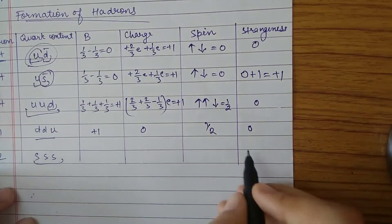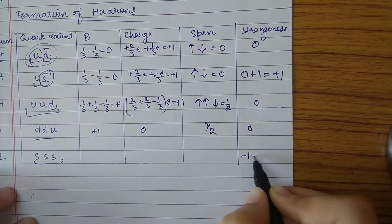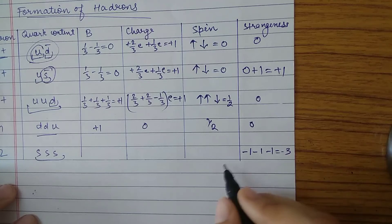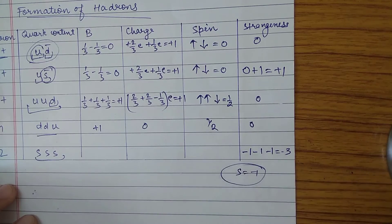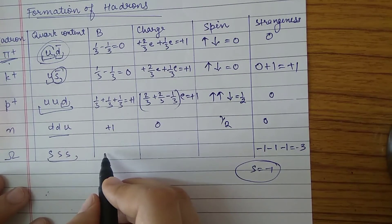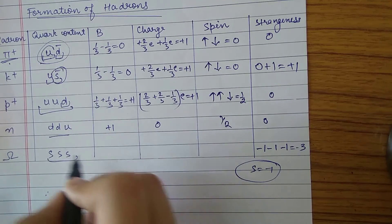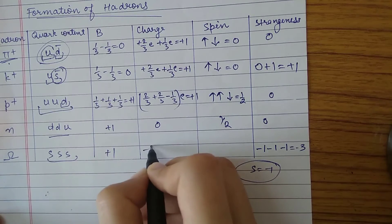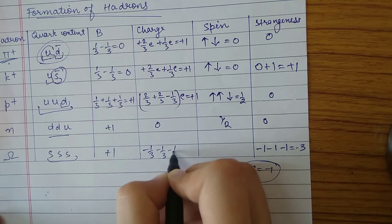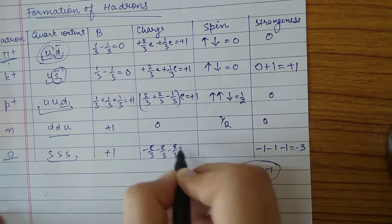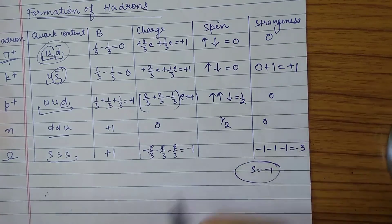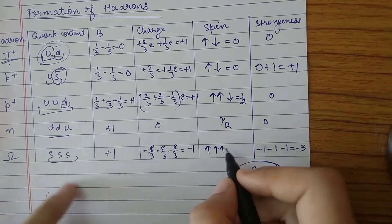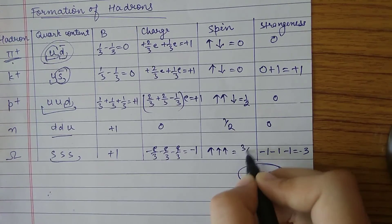For the omega-minus particle, which is made of three strange quarks (sss): strangeness = −1 + (−1) + (−1) = −3, since each strange quark has strangeness −1. Baryon number = +1. Charge = −1/3 − 1/3 − 1/3 = −1. Since all three strange quarks have spin up, total spin = 3/2.